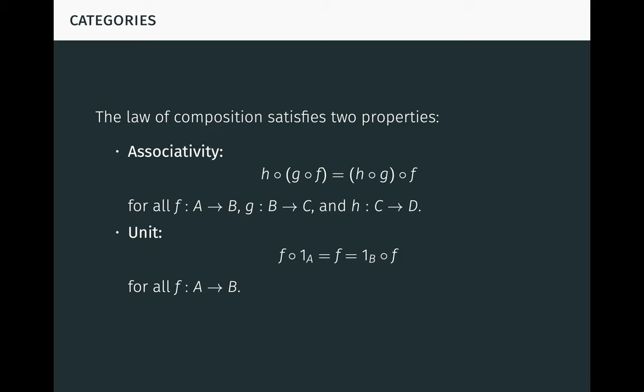The second property is unity. It says that the identity arrows don't do anything. If F is an arrow from A to B, then applying F after applying the identity on A is just the same as applying F. Similarly for applying the identity on B after applying F. Although the identity arrows don't do anything, they're still useful, just like the number 0 is useful as the identity for addition, and the number 1 is useful as the identity for multiplication.